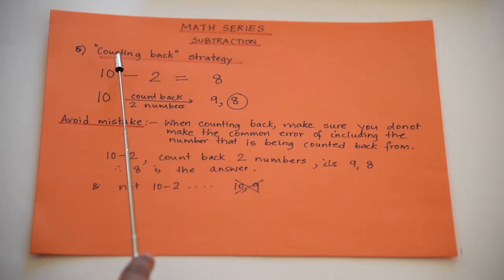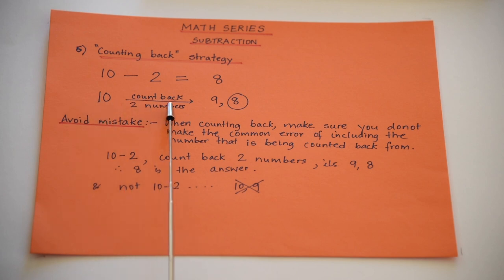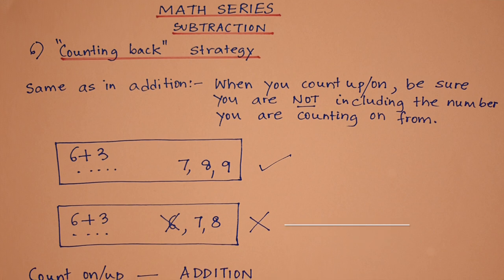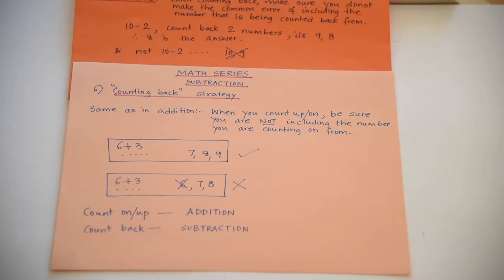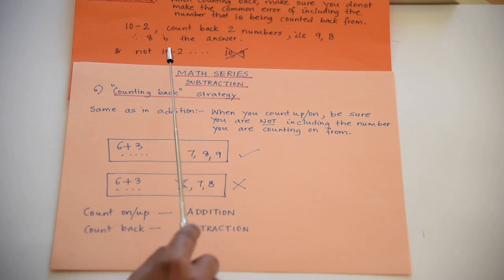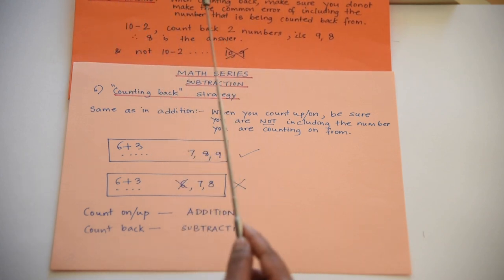Now let's learn the counting back strategy. What is ten minus two? Eight. You count back two numbers from ten: nine, eight. The most common mistake is to include ten — do not include the number you are counting back from. The answer is nine, eight — so the answer is eight. It's the same idea as counting on in addition: for six plus three, you do not include six; you count seven, eight, nine. Similarly, for ten minus two, you count nine, eight, so the answer is eight.